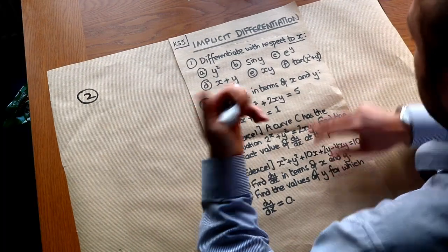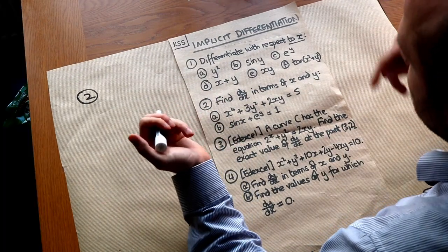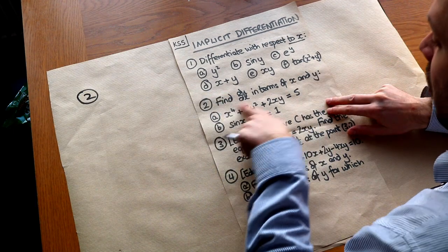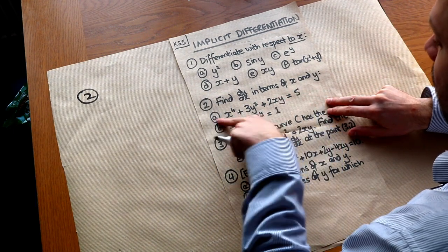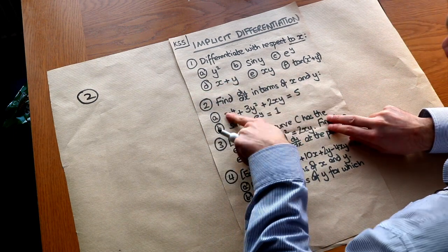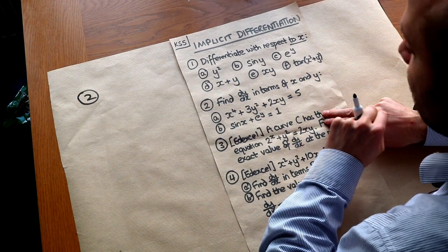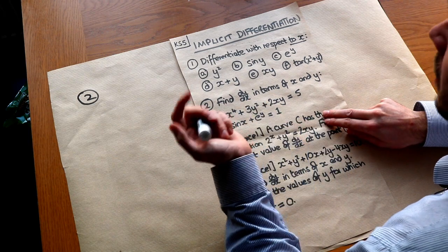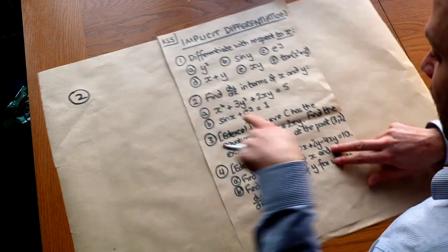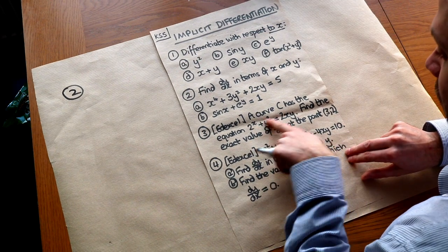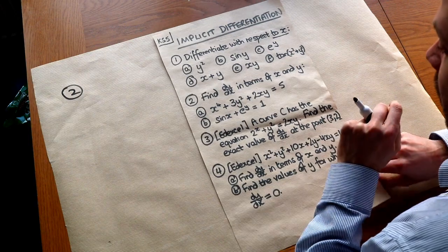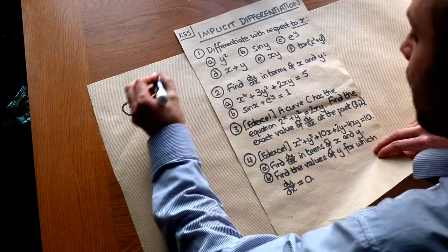You might think: what's the point of this technique? Why differentiate a mixture of x and y with respect to x? It's because when you have this kind of relationship between x and y which is not explicit but implicit — because the x and y are sort of mixed up together in the equation — we can still find the gradient at a particular point, particularly for these later examples where we're finding the gradient on a more complex curve.